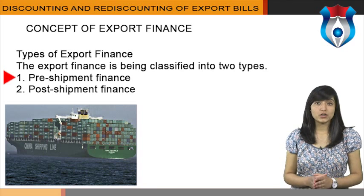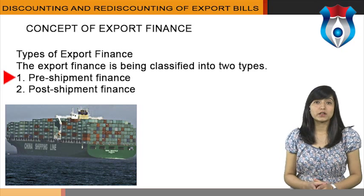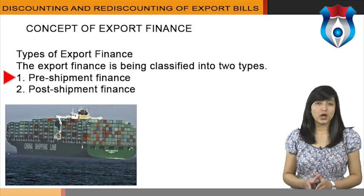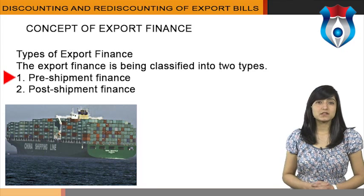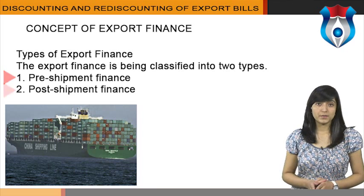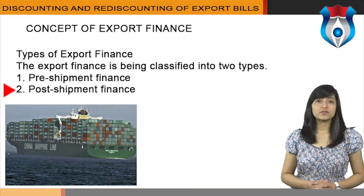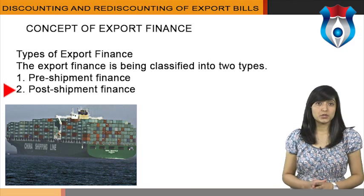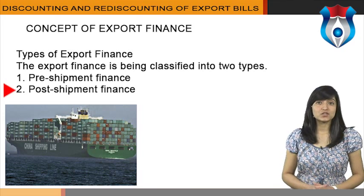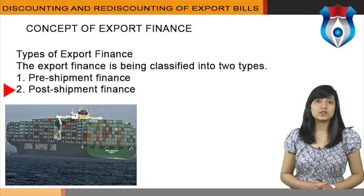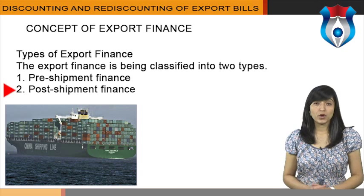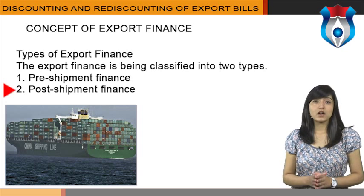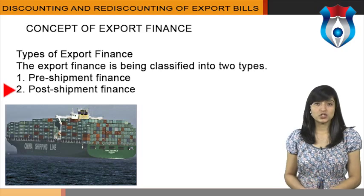Export finance is classified into two types: pre-shipment finance and post-shipment finance. Pre-shipment finance is also referred to as packing credit — it is working capital finance provided by commercial banks to the exporter prior to shipment of goods. The finance required to meet various expenses before shipment of goods is called pre-shipment finance or packing credit. Post-shipment finance is provided to meet working capital requirements after the actual shipment of goods. It bridges the financial gap between the date of shipment and the actual receipt of payment from overseas buyers, and finance provided after shipment of goods is called post-shipment finance.